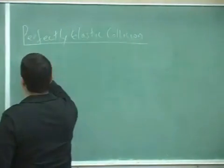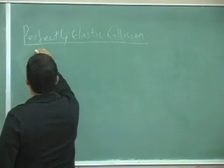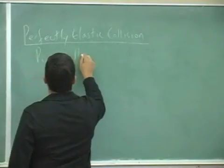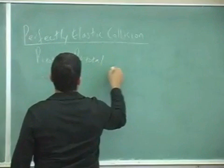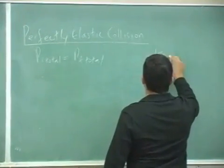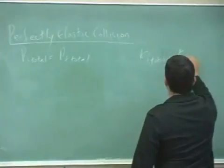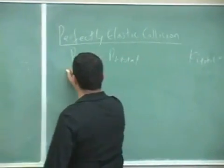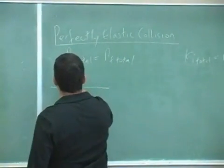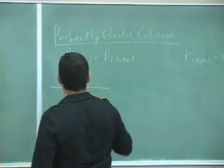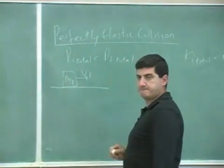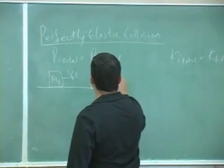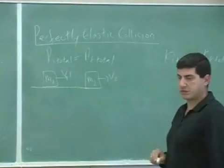So a perfectly elastic collision would mean that momentum initial total would equal momentum final total and kinetic initial total would equal kinetic final total. So what would happen is you have M1, V1 and then it goes and hits M2, V2.